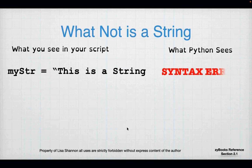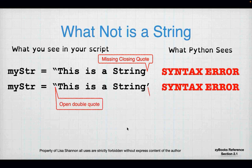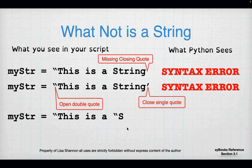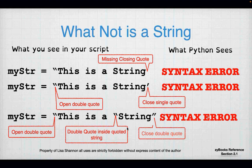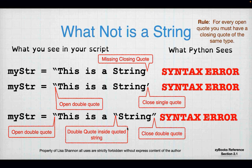What's not a string? If it's missing a close quote, Python sees a syntax error. If it has an opening double quote and a closing single quote, that's a syntax error — they have to match. If there is a double quote inside of two double quotes, Python doesn't know what to do with it. The rule is: for every open quote, you have to have a closing quote of the same type. You can use single quotes or double quotes, but they just have to match.